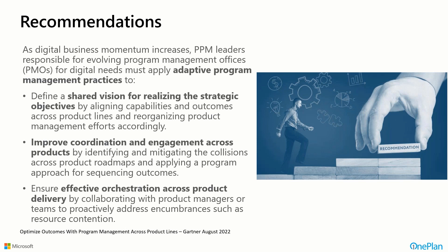Recommendations from the Gartner Group from their survey indicate we need to define a shared vision for realizing strategic objectives. If we have multiple products and product lines, we must share a vision that our executives put forth for achieving organizational outcomes. We need to improve coordination and engagement across products and product lines, mitigating inconsistencies or collisions that might hinder one another, and ensure more effective orchestration across product delivery, collaborating proactively to address blockers, resource contention, or technological contention.